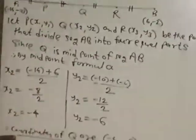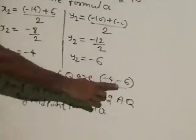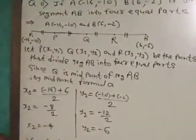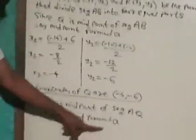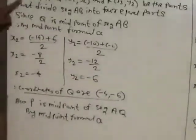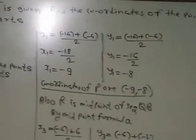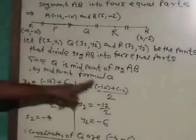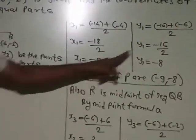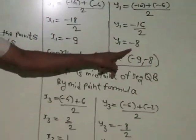Coordinates of Q are (-4, -6). P is the midpoint of segment AQ. Therefore by midpoint formula: x₁ = (-14 + (-4))/2 = -18/2 = -9, and y₁ = (-10 + (-6))/2 = -16/2 = -8. Coordinates of P are (-9, -8).